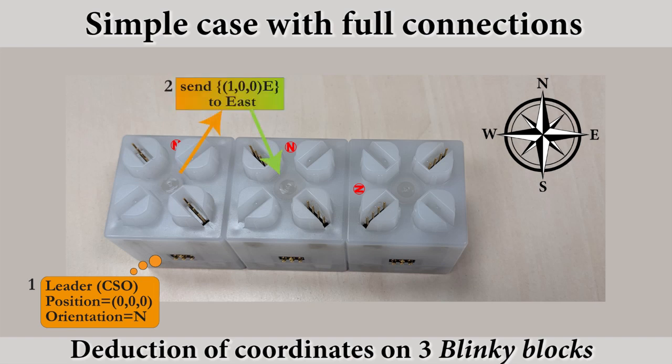This module sends a message to all its neighbors, specifying the relative position of the neighbor and the direction of the port of emission. The middle module receives this message with its position, and knowing the receiver port, it can deduce its orientation.